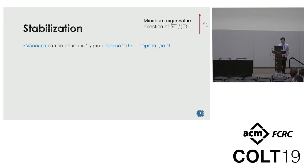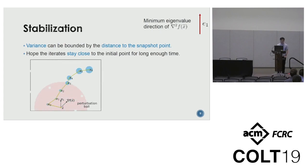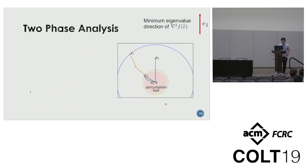To resolve this problem, we introduce the stabilization technique. The variance of the gradient estimator can be bounded by the distance to the snapshot point. We hope the iterates stay close to the initial point for long enough time, so we have good control on the variance. Without stabilization, the gradient at x_θ is non-zero. The iterates can move very fast. The blue circle indicates the magnitude of the variance. With stabilization, we make sure that the shifted function has exactly zero gradient at x_θ. Now the iterates will stay close to the initial point for long enough time.